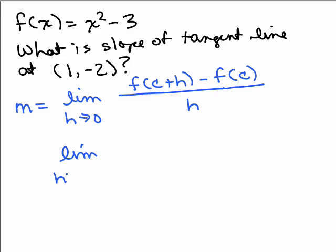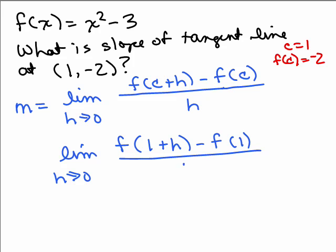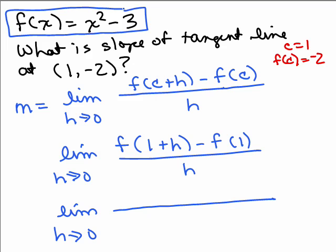Now, the limit is h approaches 0 of f of, now remember, c is 1 and f of c is negative 2 from this ordered pair 1, negative 2. So we've got f of 1 plus h minus f of 1 over h. And what's f of 1 plus h? Well, we're going to have to plug in 1 plus h in for x into the function here. So we've got to put in 1 plus h for x. So we've got 1 plus h squared minus 3, minus,